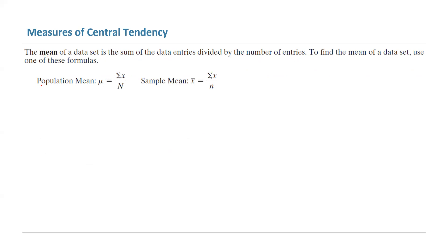If you're dealing with a population, the population mean is denoted by mu. You take all data, add them together, and divide by the number of data in your collection. If you're using a sample, however, it has a different representation: x bar.